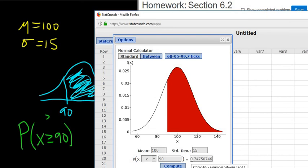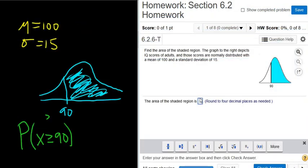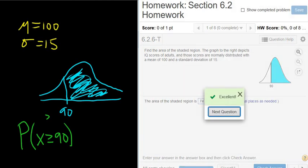And there's the number. The answer is 0.7475. That's the area of the shaded region, or the probability that X is greater than or equal to 90. So 0.7475. 0.7475. Check answer. And that's it. I hope that helps.